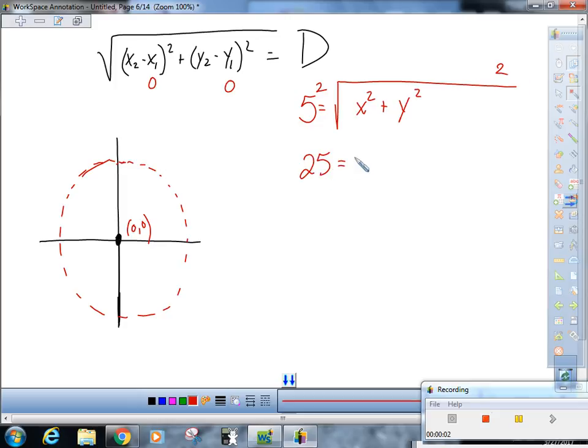And now we are starting, hopefully, to understand how the equations of circles work. This is the equation of a circle centered at what? The center is zero, zero, and the radius is five. So, that is it. There's no magic here.